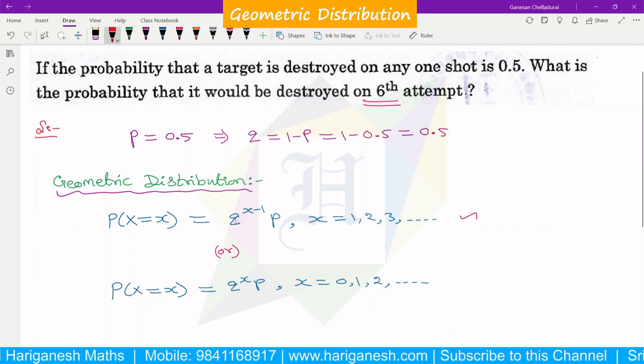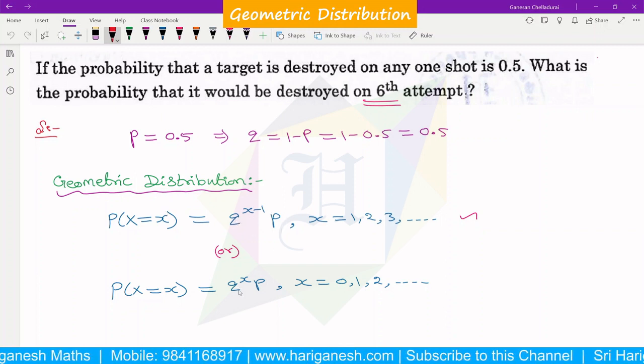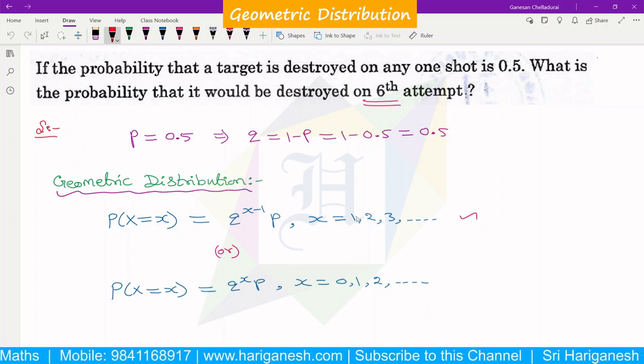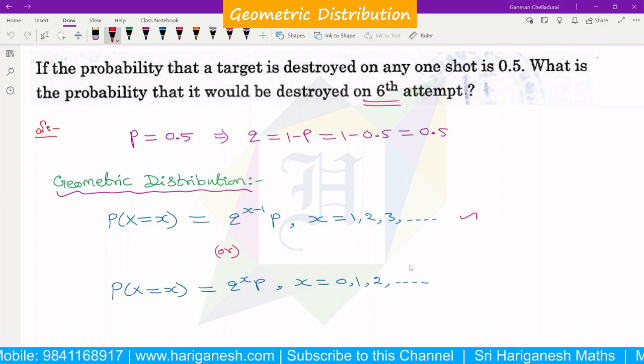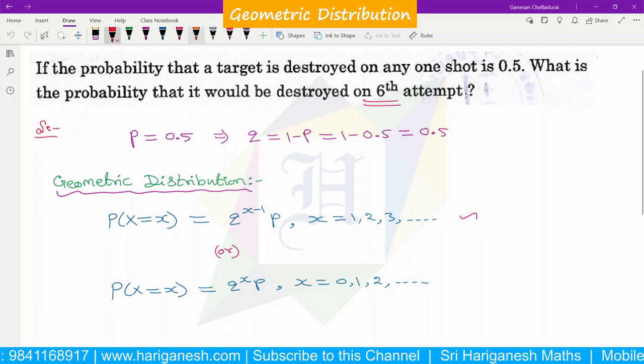The PMF is q^x times p, or q^(x-1) times p, where x is 1, 2, 3 and so on, or x is 0, 1, 2, 3 and so on.